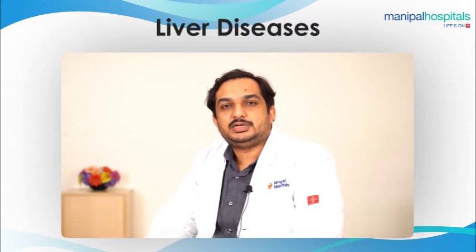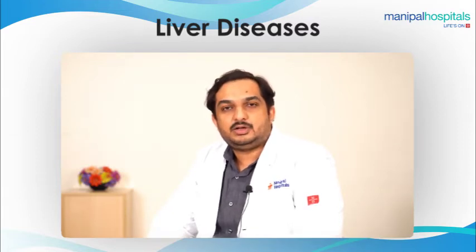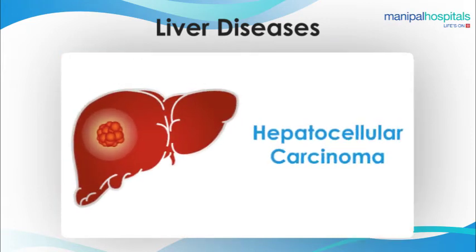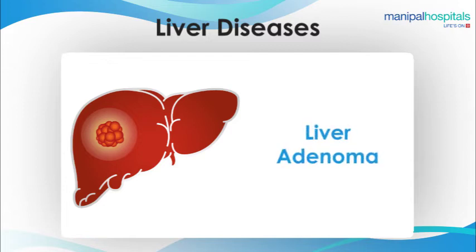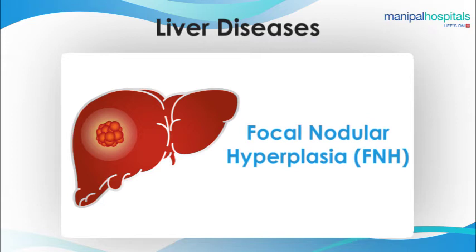Coming to the third condition, that is tumors or cancers which affect the liver. What we call is liver cancer or hepatocellular carcinoma. When the tumor affects the bile ducts, it is called cholangiocarcinoma. Or other benign conditions like liver adenoma and FNH, that is focal nodular hyperplasia.